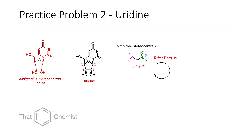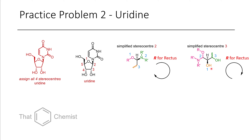Next we look at stereocenter 3. I've rearranged and flipped it around so it's clearer to see. Here we have a bit more of a complicated example. We have an oxygen, so that gets priority over the two carbons. In this case, one carbon has a nitrogen and an oxygen bound to it versus a carbon and an oxygen on the other. Because nitrogen is larger than carbon, we give priority to that carbon. Going one, two, three, we have another rectus stereocenter.